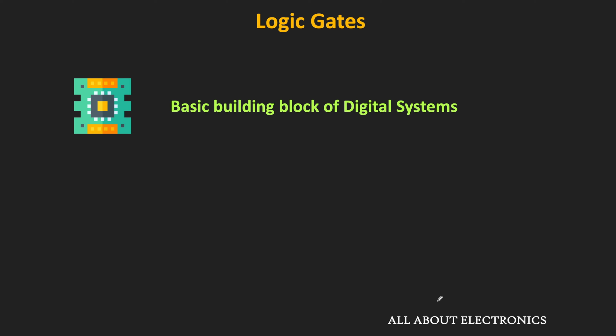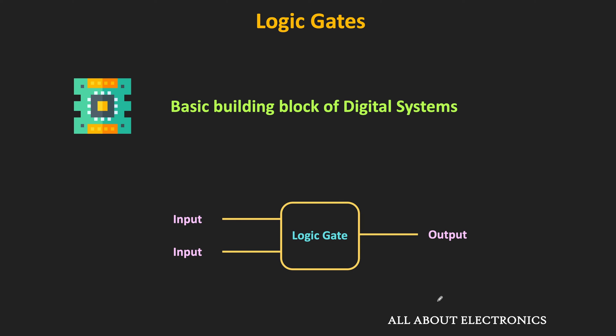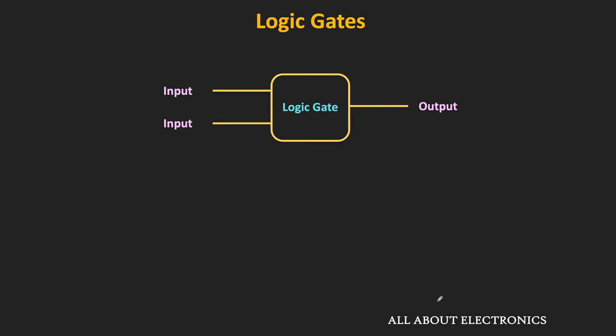These logic gates are electronic circuits which consist of one or more inputs and one output. The inputs and outputs of these logic gates can have only two values: logic 1 (the high value) or logic 0 (the low value). In reality, these high or low values are voltage levels — for example, high could be 5V while low could be 0V. The relationship between input and output is based on certain logic; for some gates the output is high when both inputs are high, and for others the output is high if any one input equals logic 0.